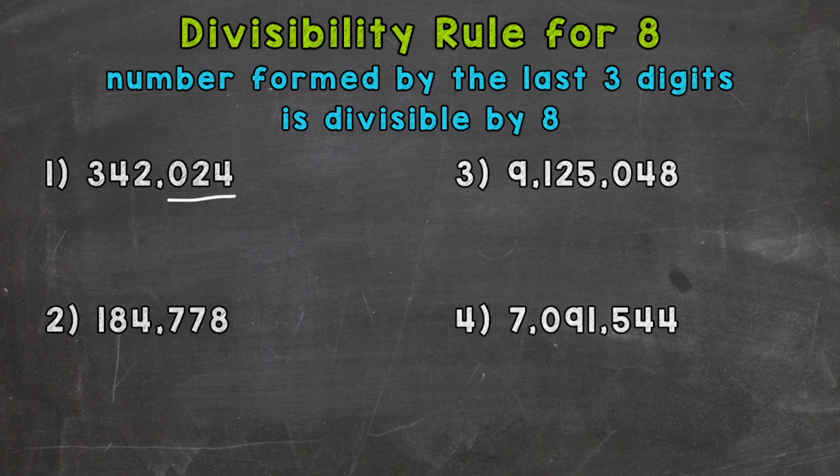Can we do 24 divided by 8 and get an answer without a remainder? Yes, 24 divided by 8 is 3. So 24 is divisible by 8. Therefore, our original number is divisible by 8. So we get a yes for number 1.